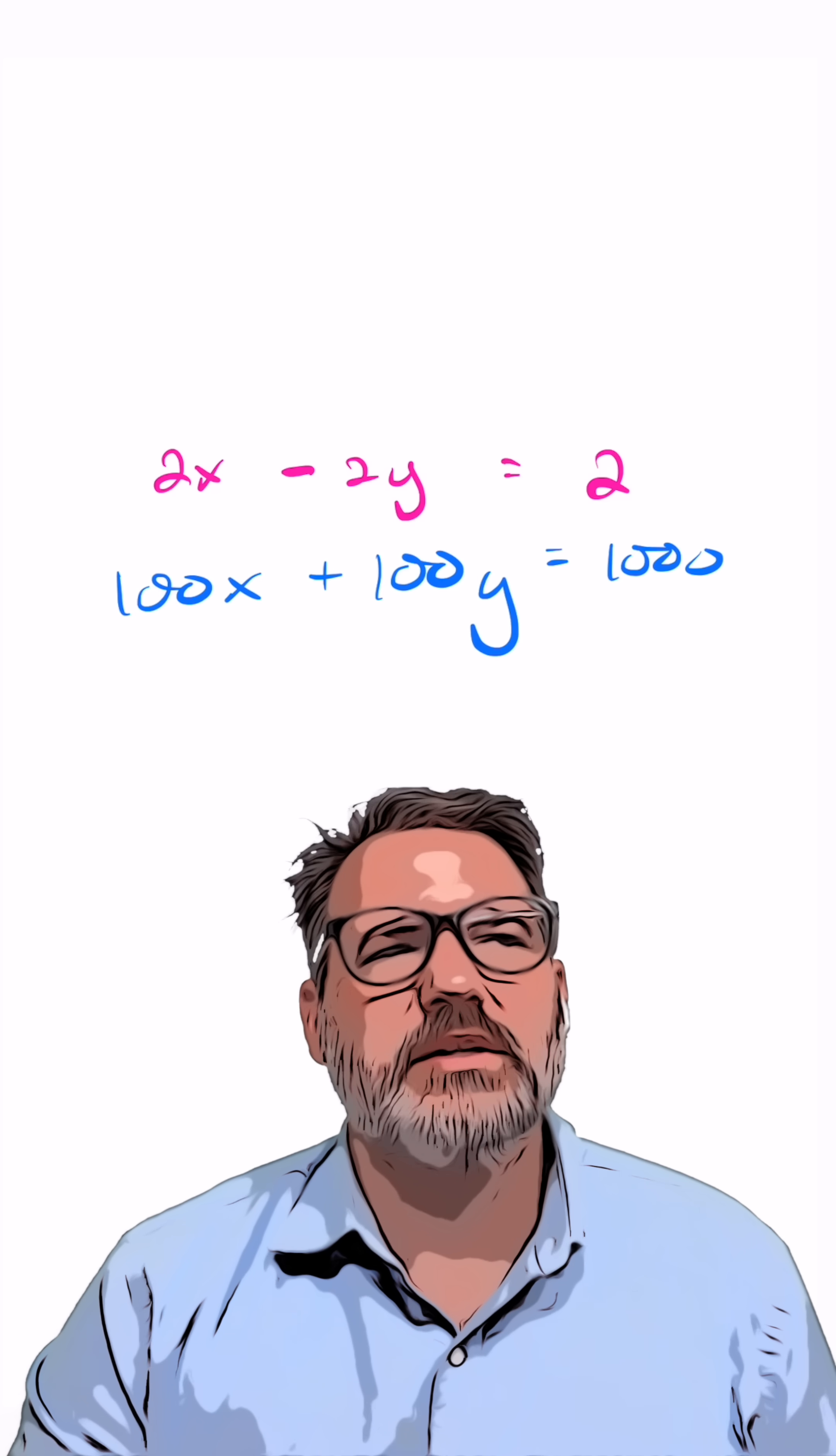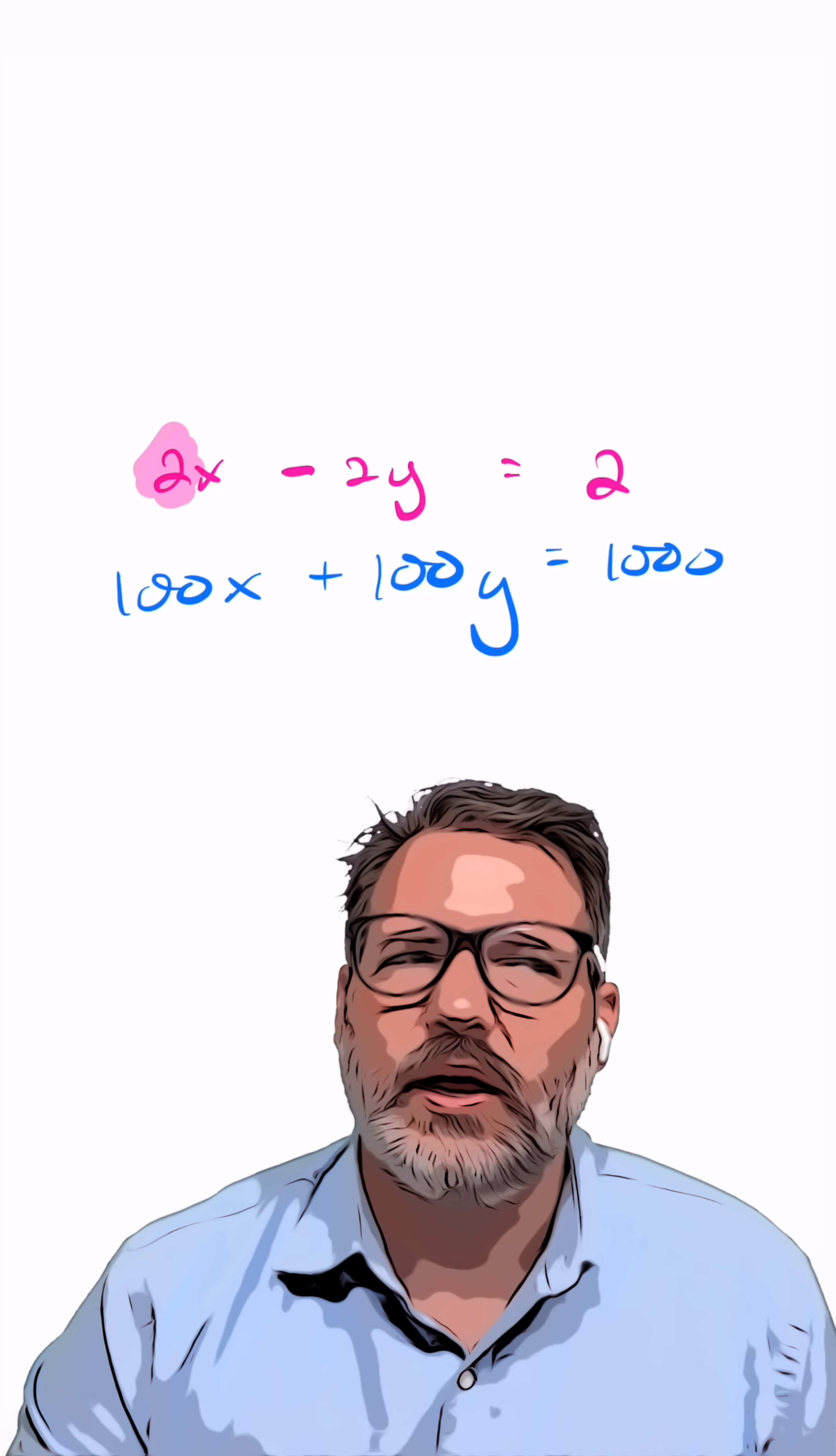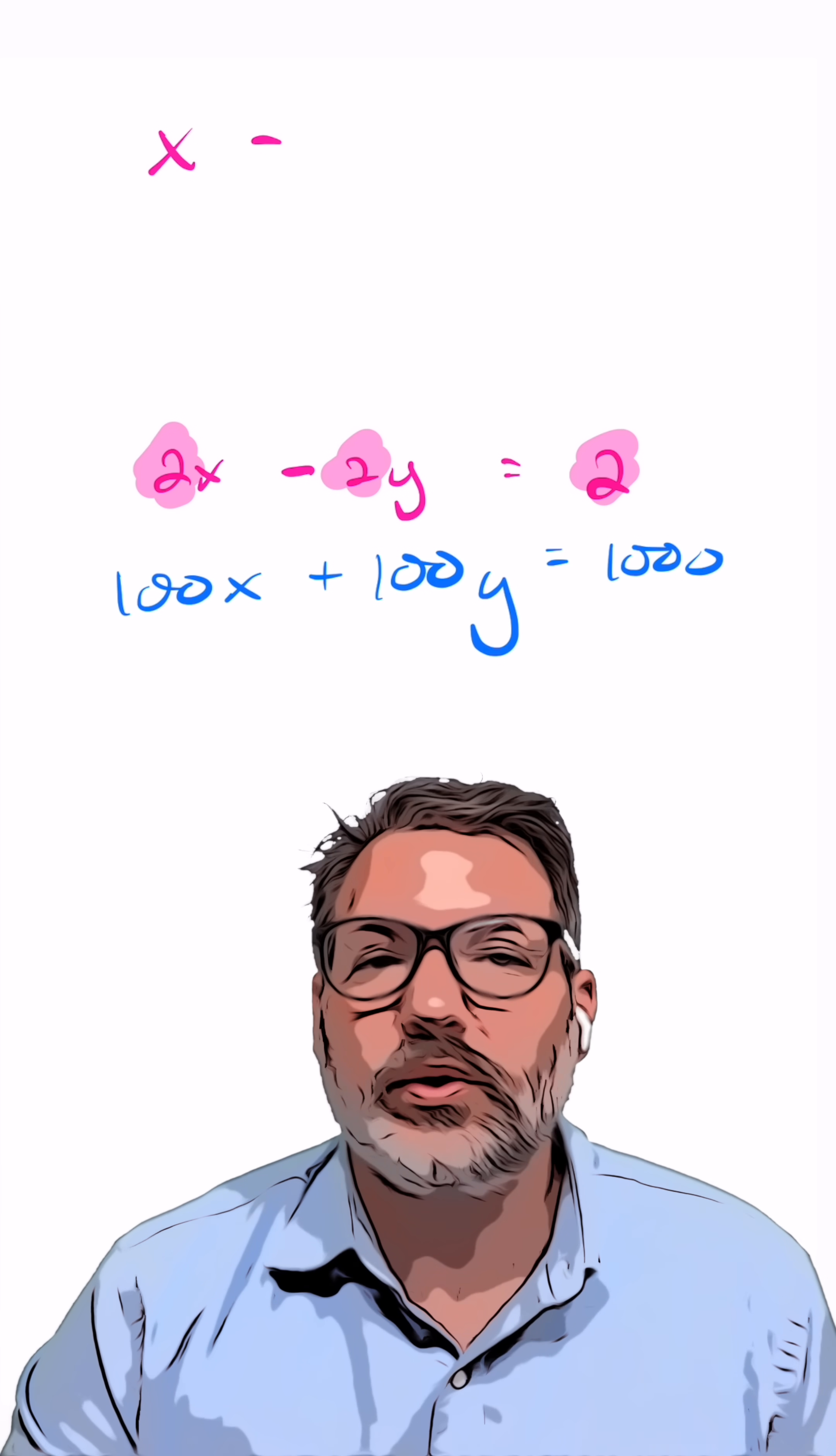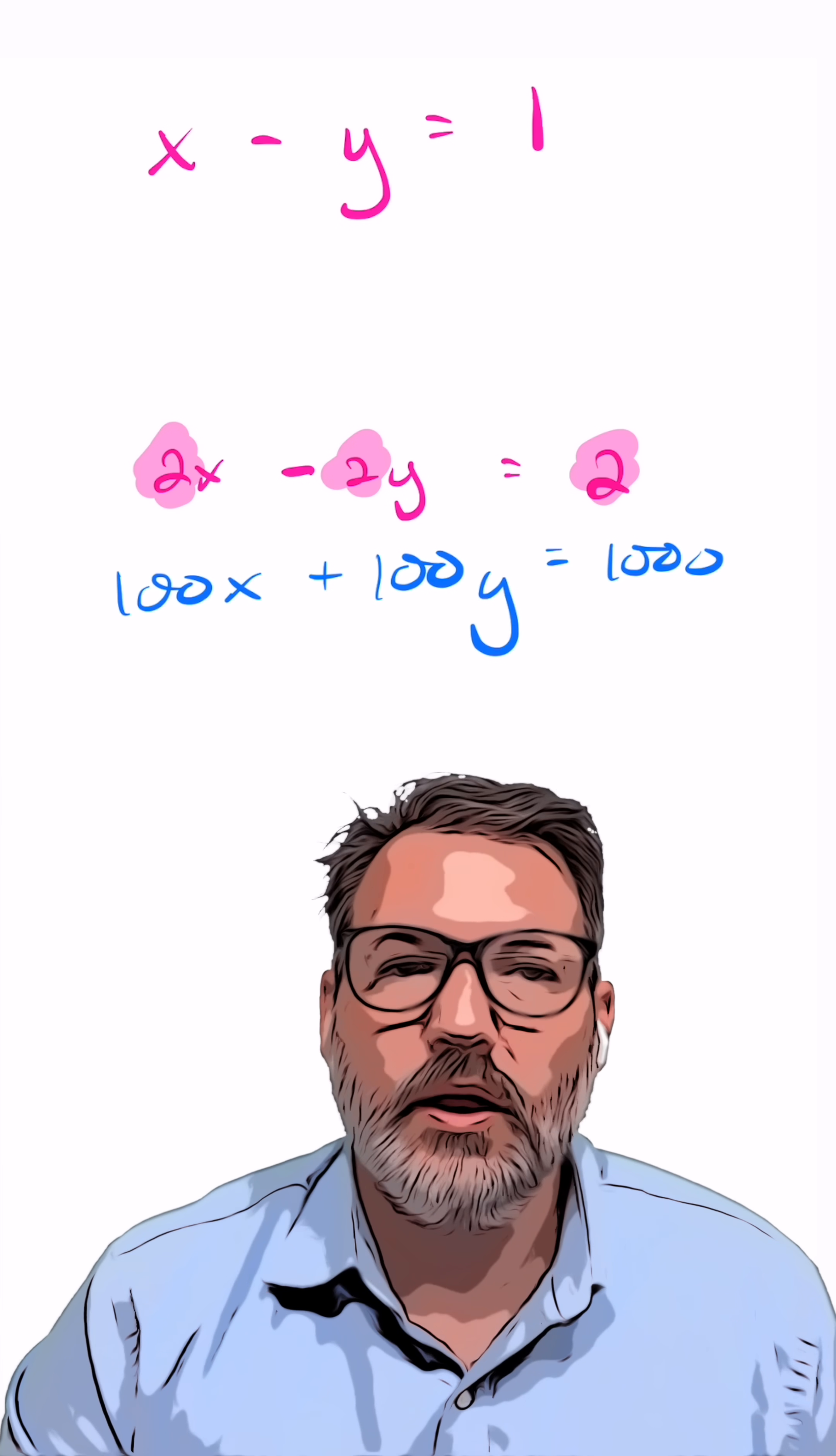Here's what I mean when I say that this system looks a little bit simpler to me. 2x minus 2y equals 2. I can see that 2 everywhere, which means it can be factored out. And therefore, I can actually rewrite that equation simply as x minus y equals 1.